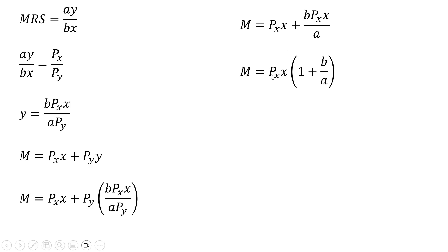Next, I factor out Px times x from both terms. Simplifying what's in parentheses, I write 1 as a/a to get a common denominator, giving us (a + b)/a in the parentheses.